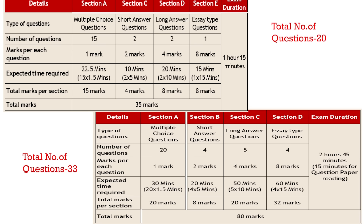Marks for each question type in the FA written test: 1 mark for each MCQ, 2 marks for short answer questions, 4 marks for long answer questions, 8 marks for SI-type questions. Total questions: 20. Total marks: 35. Time: 1 hour 15 minutes. For summative assessments: MCQs are 20, short answer questions are 4, long answer questions are 5, and SI-type questions are 4.